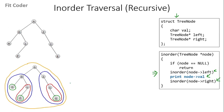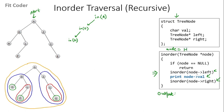Let's draw the recursion tree diagram for in-order traversal, starting from node A. We call in-order for A — it is not null, so we call in-order for left of A, which is D. We check if D is null, then call in-order for left of D, which is H. We check H, then call in-order for left of H, which is null, so we return. We then print H, call in-order for right of H which is also null, and return. Now in-order of H is finished, so we return.